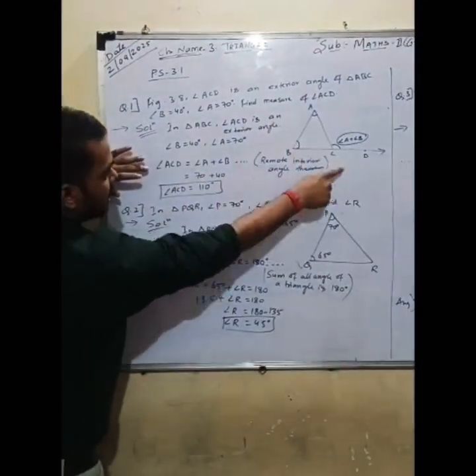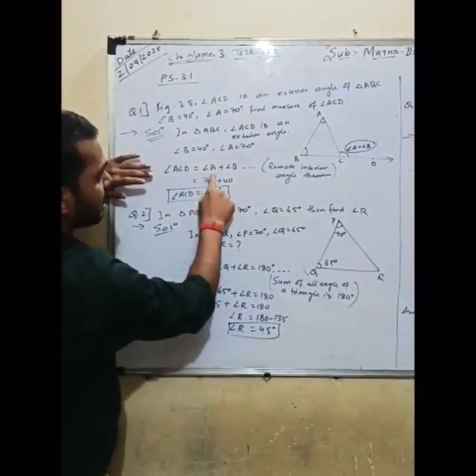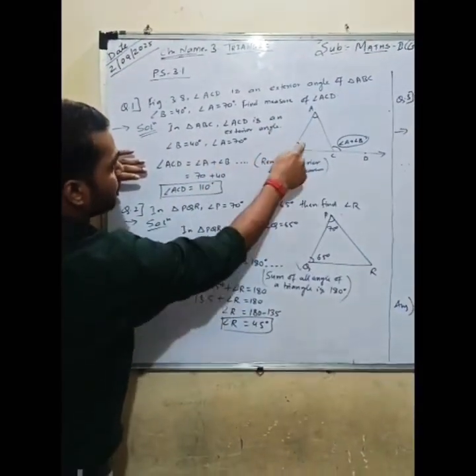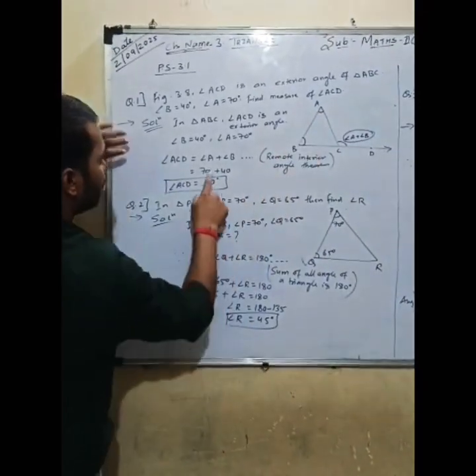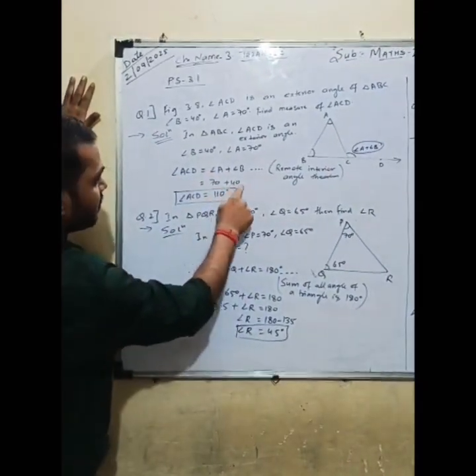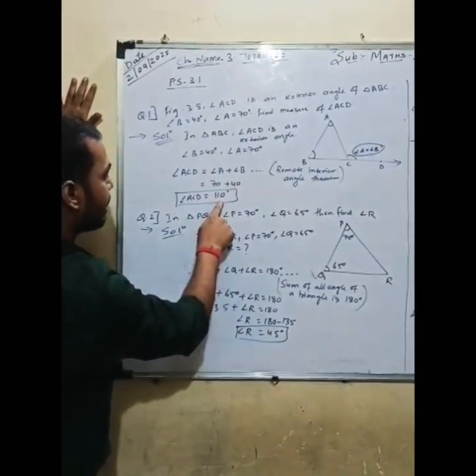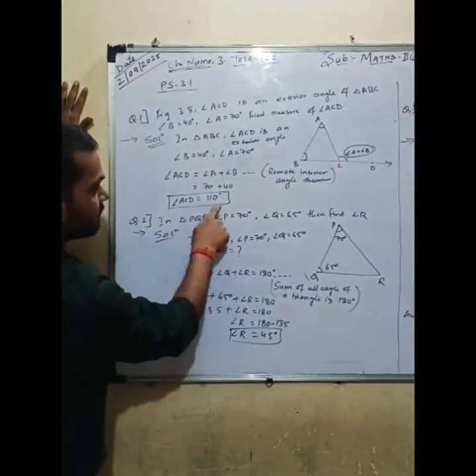So the exterior angle ACD is equal to angle A plus angle B. These are the two remote interior angles. A is 70 degrees plus 40, which gives us 110 degrees. So the value of angle ACD is equal to 110 degrees.